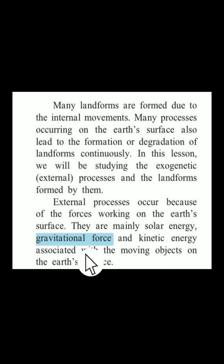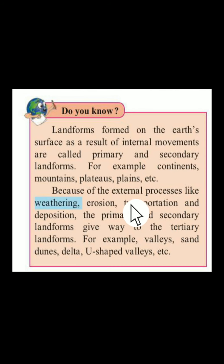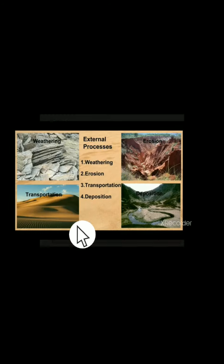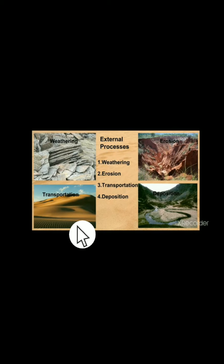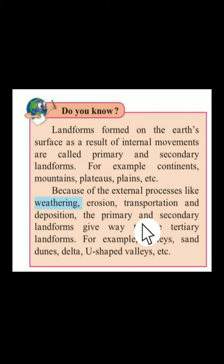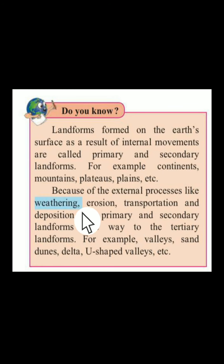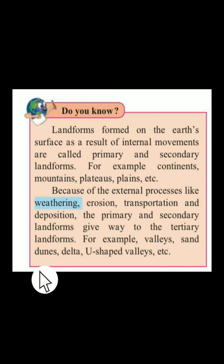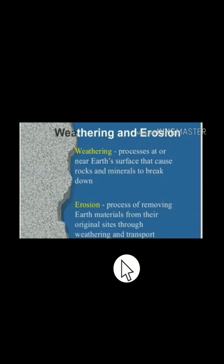Next paragraph: because of external processes like weathering, erosion, transportation, and deposition, the primary and secondary landforms give way to new landforms. Due to these four things, a new landform is formed — called a tertiary landform. Examples already explained include valleys, sand dunes, deltas, and U-shaped valleys.